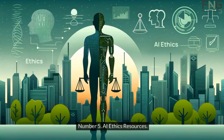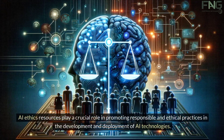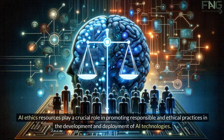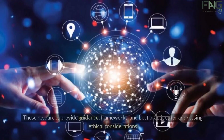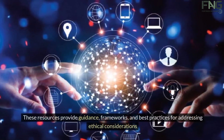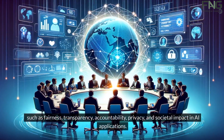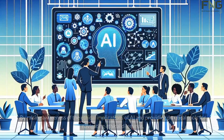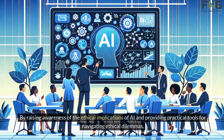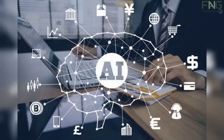Number five: AI ethics resources. AI ethics resources play a crucial role in promoting responsible and ethical practices in the development and deployment of AI technologies. These resources provide guidance, frameworks, and best practices for addressing ethical considerations such as fairness, transparency, accountability, privacy, and societal impact in AI applications. By raising awareness of the ethical implications of AI and providing practical tools for navigating ethical dilemmas, these initiatives aim to ensure that AI is developed and used in ways that align with societal values and respect human rights.